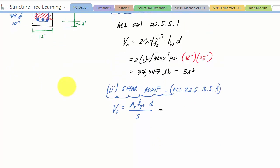So an area of a number three bar is 0.11 inches squared, and so the area of shear reinforcement is two times 0.11 inches squared times 60 ksi times d, which is 25 inches, over s, which is the spacing of 10 inches. And you know, technically all these equations should use pounds and inch squared.